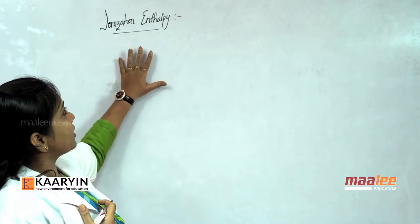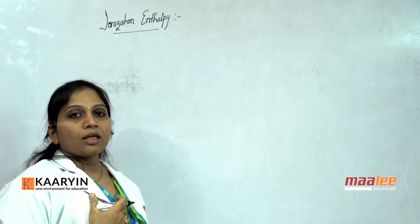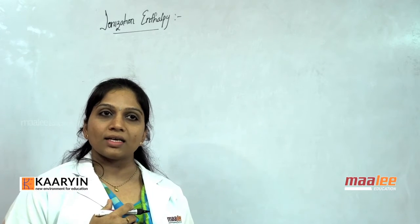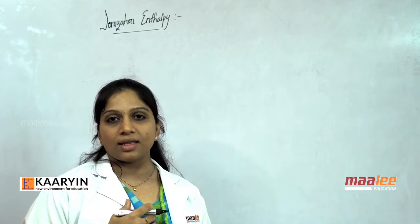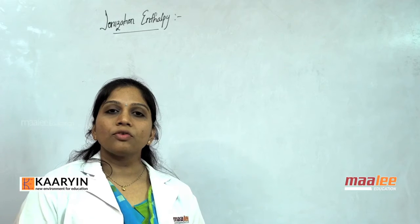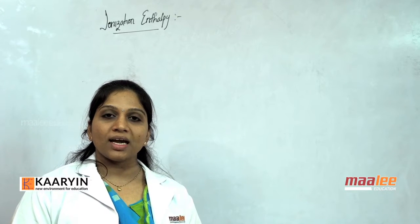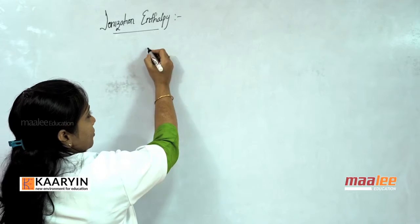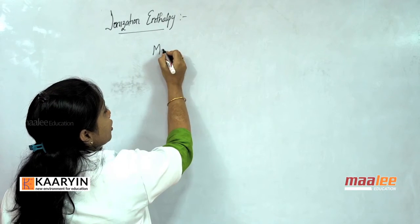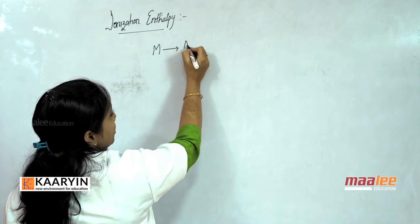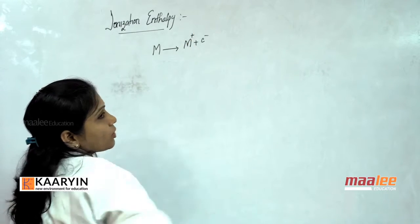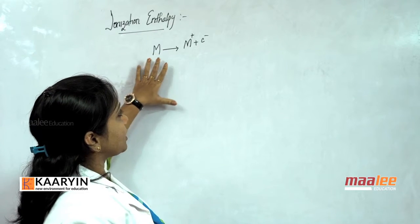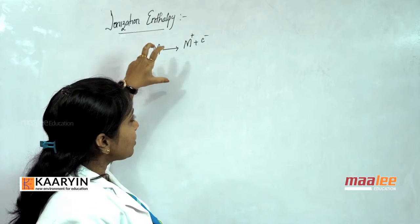Now let us define what is ionization enthalpy. The minimum amount of energy required to remove an electron from the gaseous neutral isolated atom is called ionization potential or ionization enthalpy. For example, an element M in the gaseous state — to remove an electron, it becomes M⁺. One electron is removed, and energy is required to remove that electron from the outermost orbit to make it a unipositive ion.